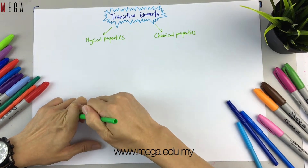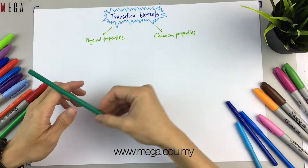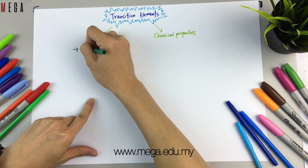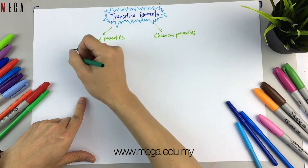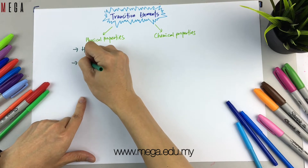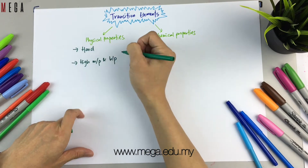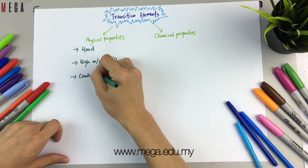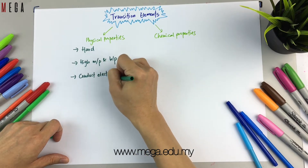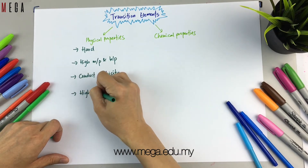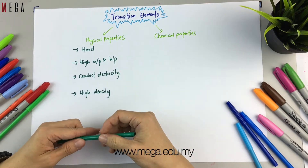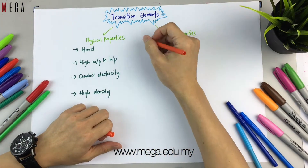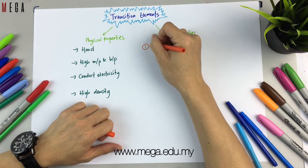First, the physical properties. All transition elements are hard. They also have high melting point and boiling point. They can conduct electricity because of the presence of free moving electrons, and they have high density as well.